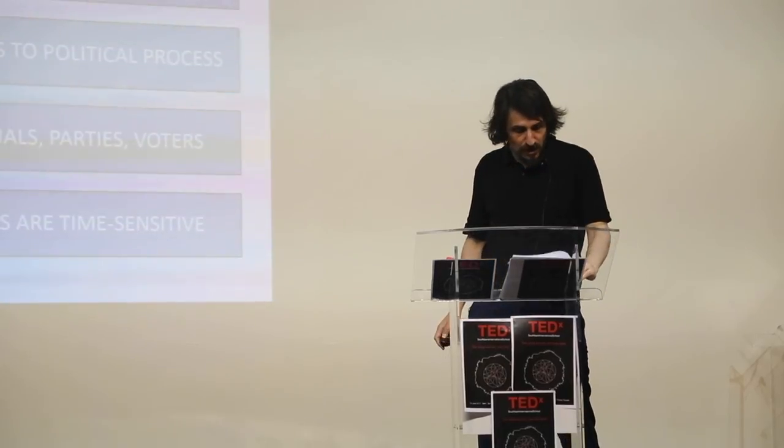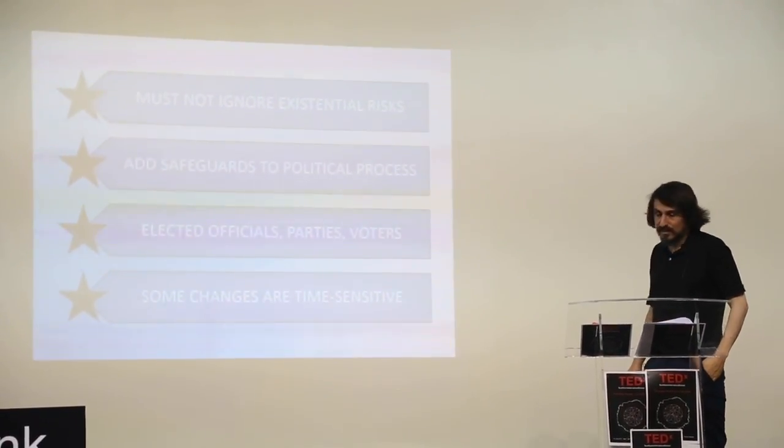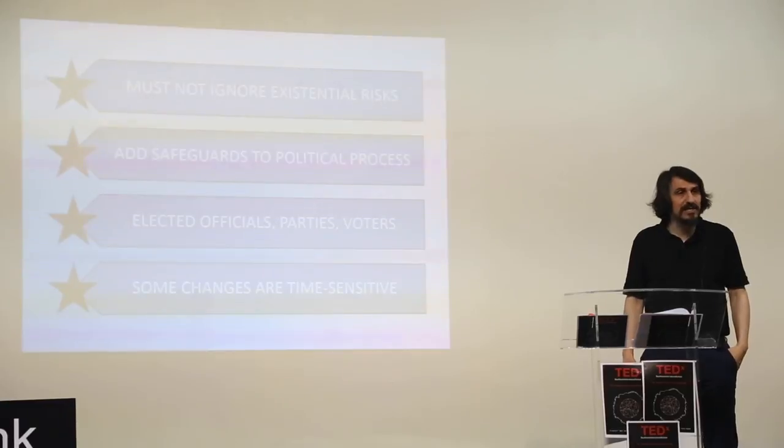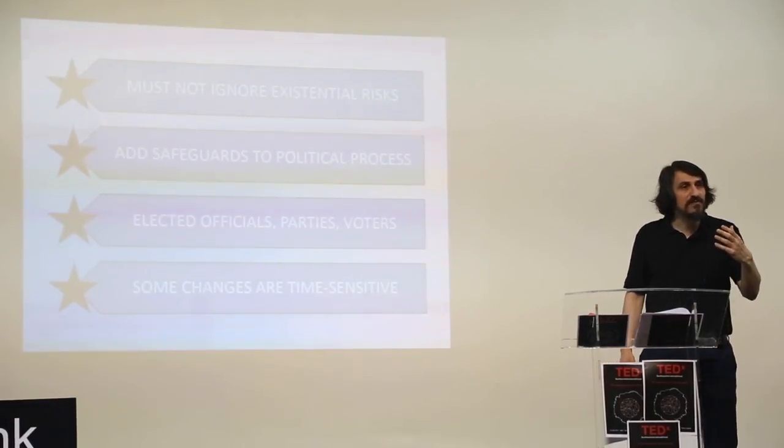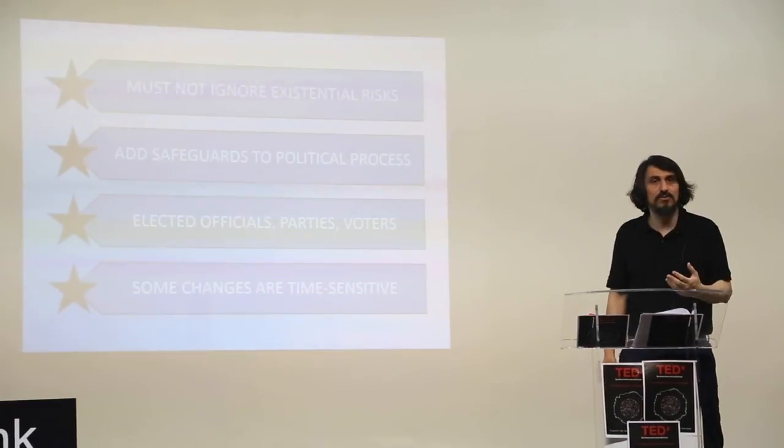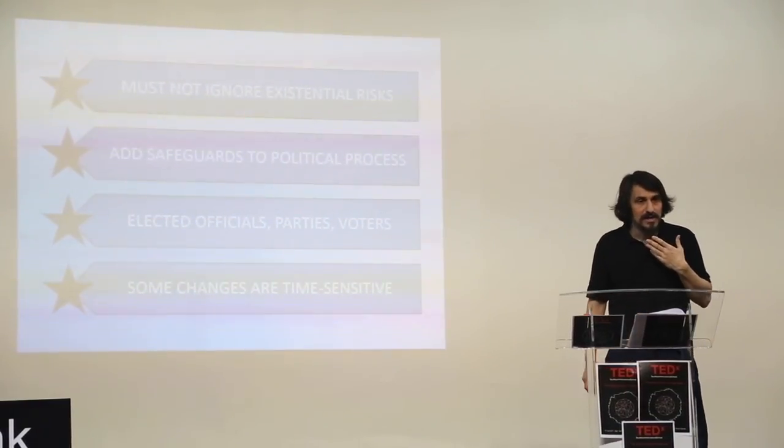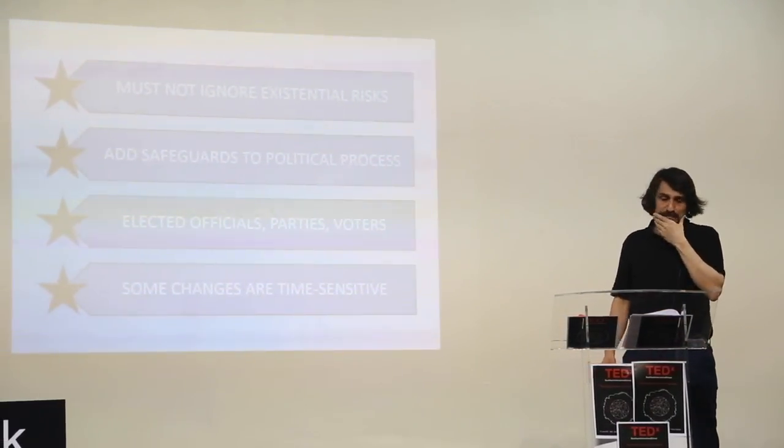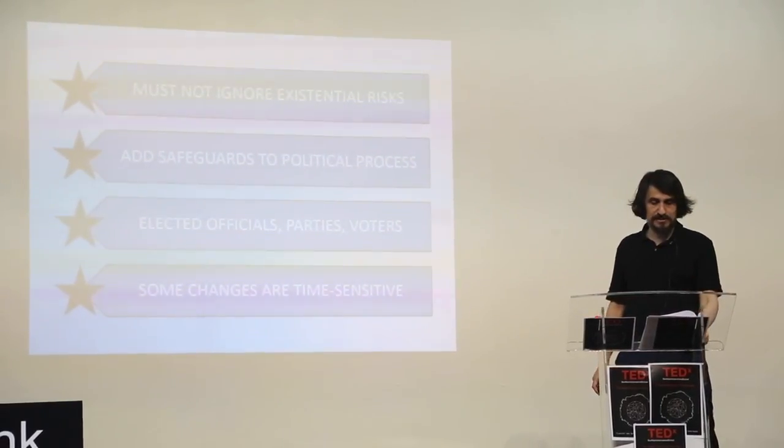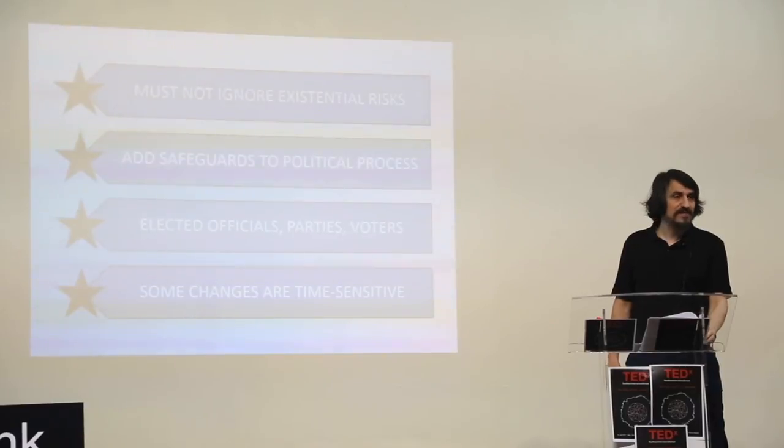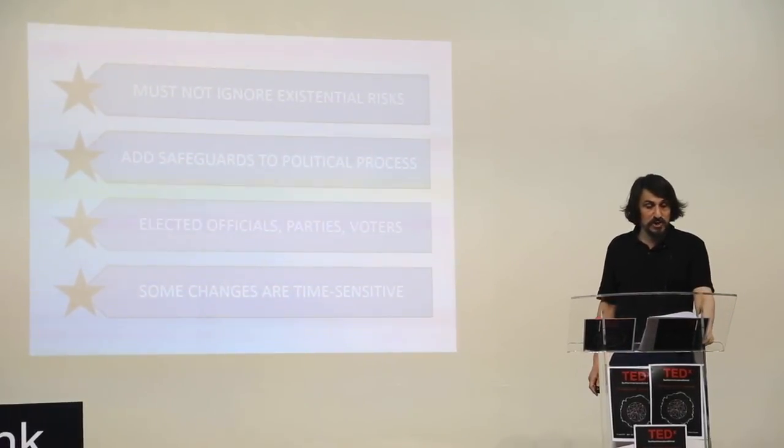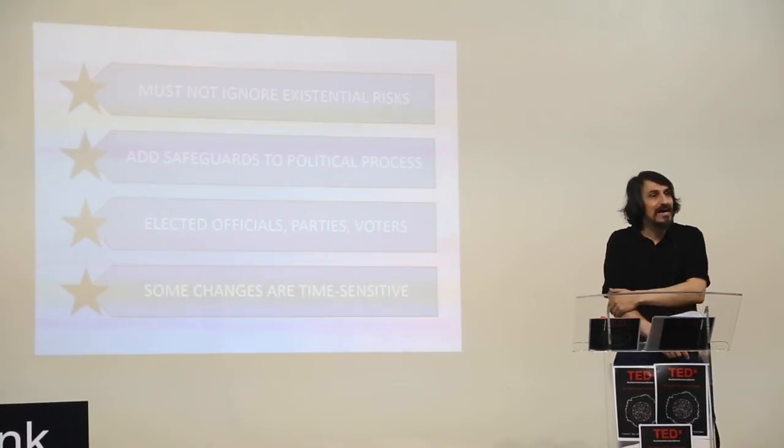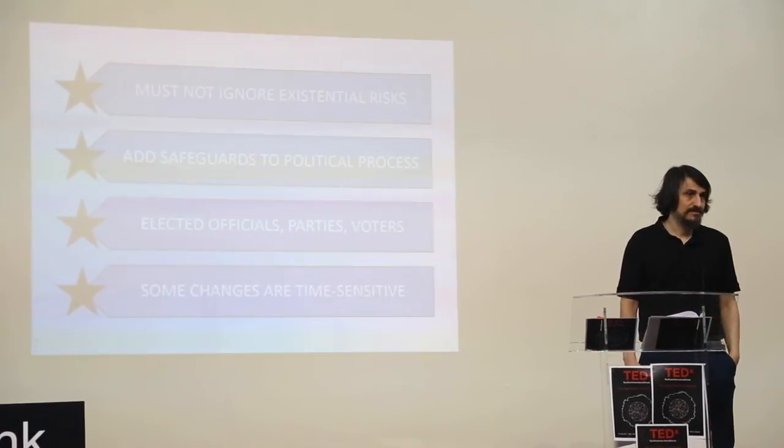So to summarize, there are clear existential risks that must not be ignored. The best way to tackle these threats is to add safeguards to the political process. And they don't have to be the safeguards I'm proposing here. I just want you to at least think of what can be done to improve our ability to deal with these risks. To be precise, I propose changes at all three levels of the political process. I then briefly replied to the argument that some changes need be made before it's too late. Or to put it another way, unless we act now, there may not be another day to act. Thank you.